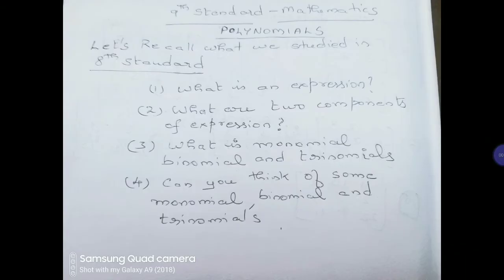Hope you have answered the questions. So now let us see the answers. First question was: what is an expression? An expression consists of terms with alphabets and numbers, like 5x + 3y, 2x − 7, 3y + 8. These are all expressions. An expression can contain any number of terms, not only two.